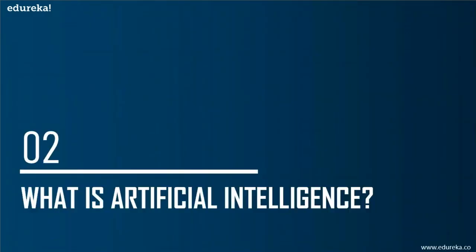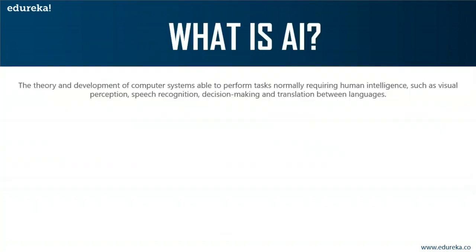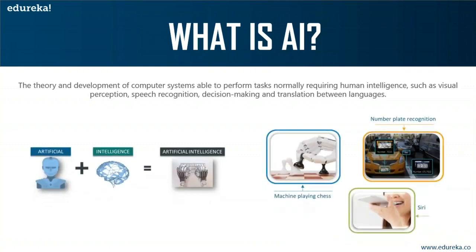The term artificial intelligence was first coined in 1956 by John McCarthy at the Dartmouth Conference. He defined AI as the science and engineering of making intelligent machines. In other words, artificial intelligence is the theory and development of computer systems able to perform tasks that normally require human intelligence — such as visual perception, speech recognition, decision making, and translation between languages. In a sense, AI is a technique of getting machines to work and behave like humans, and it has been applied in fields including healthcare, robotics, marketing, and business analytics.